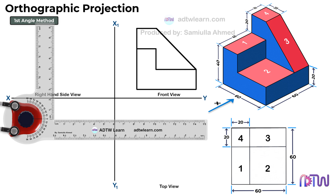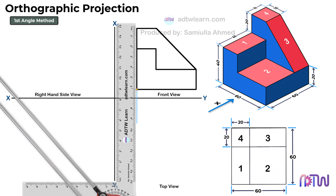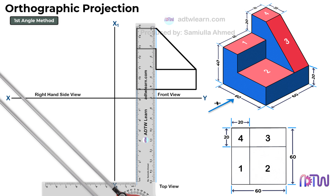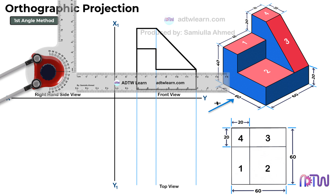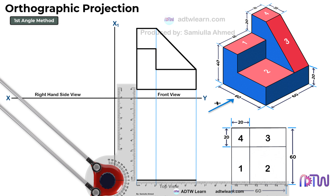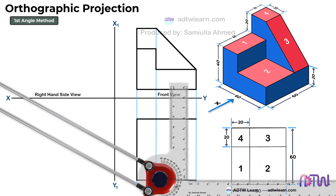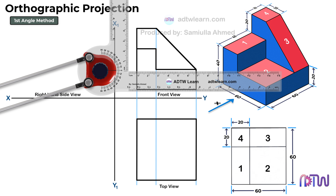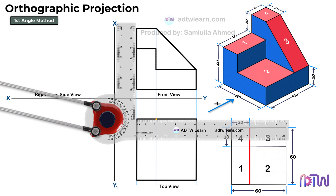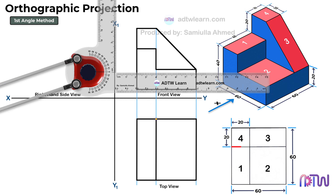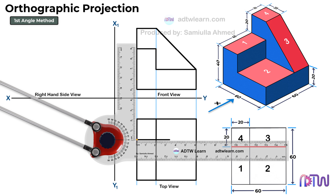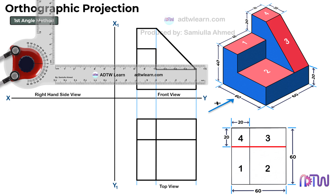Let's start drawing the top view. Before drawing, we will first draw the reference lines from all corner points of the front view. Take a drafter and draw a 60 millimeters horizontal line and 60 millimeters vertical line and construct a square. This line is 20 millimeters away from the edge, so mark a point at 20 millimeters from the edge and draw a vertical line. This line is also 20 millimeters away from the horizontal line, so mark a point at 20 millimeters from the top and draw a horizontal line. This is the required top view of the object.